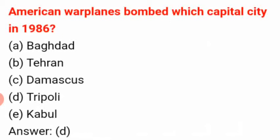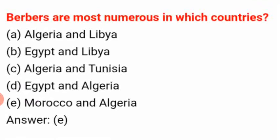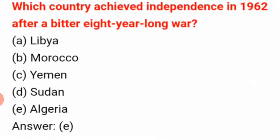American warplanes bombed which capital city in 1986? The answer is D: Tripoli. Berbers are most numerous in which countries? The answer is E: Morocco and Algeria. Which country achieved independence in 1962 after a bitter eight-year-long war? The answer is E: Algeria.